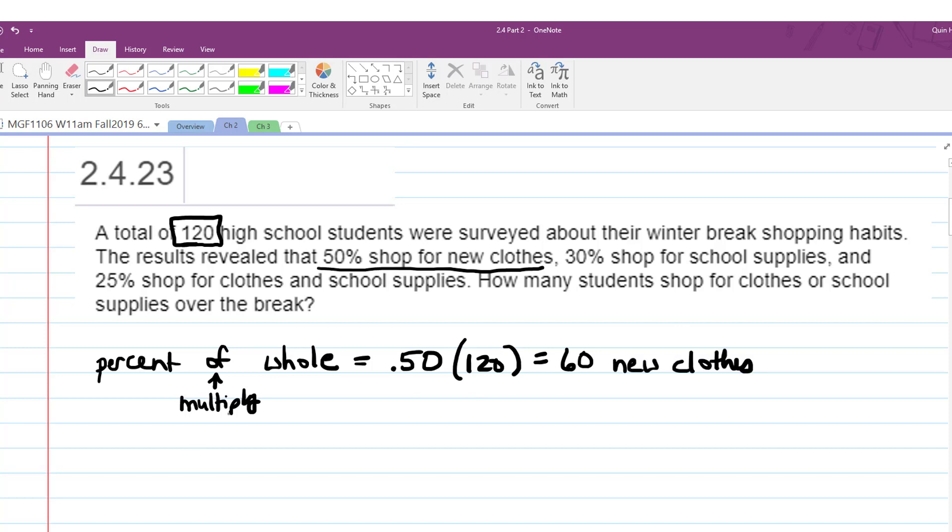How do we find the 30% that shopped for school supplies? 0.30 is the percent of, so multiply, times 120. What is 30%, 0.3 times 120? 36. 3 times 12 is 36.